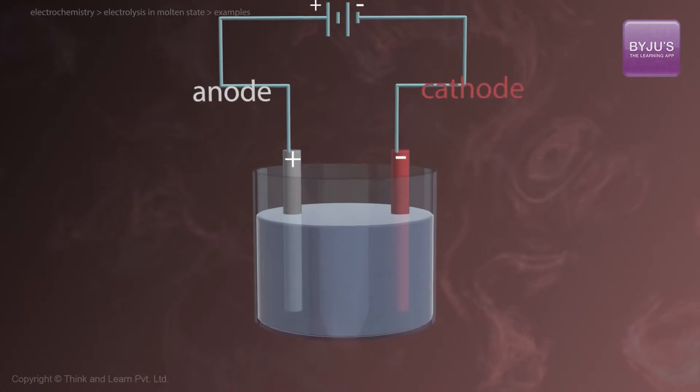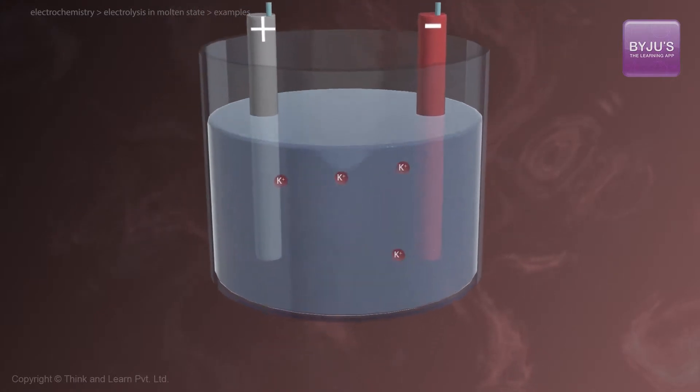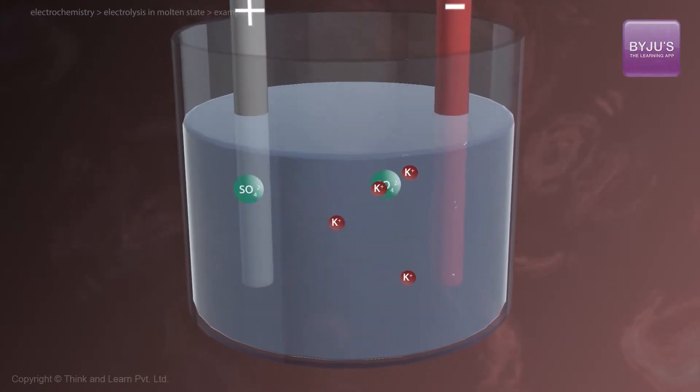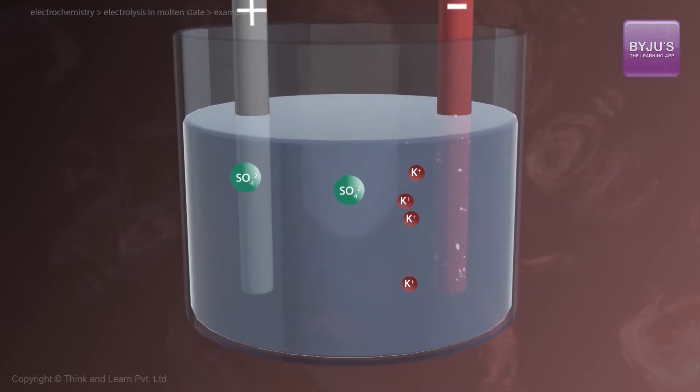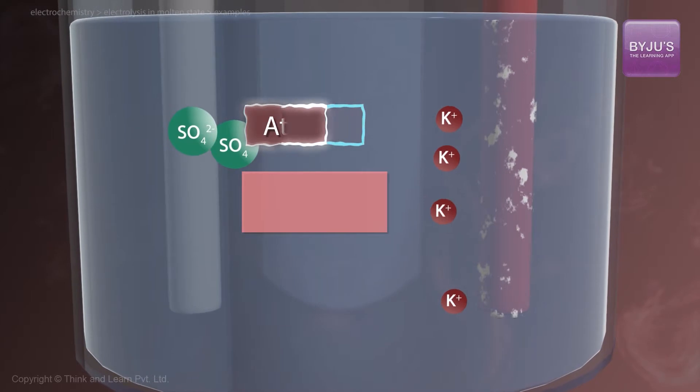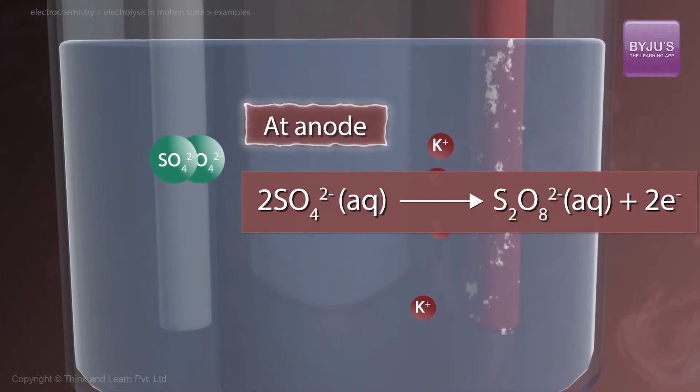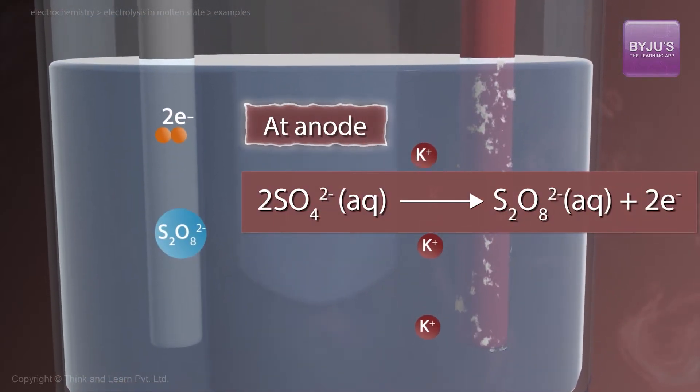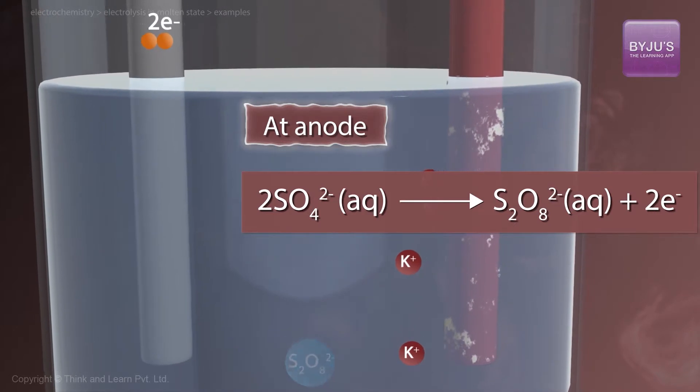Let us take another example: molten K2SO4. K2SO4 gets converted into 2K+ plus SO4 2-. In this case, at the anode, SO4 2- ions get oxidized. 2SO4 2- gets converted into peroxodisulfate ion, which is S2O8 2-, plus 2 electrons.